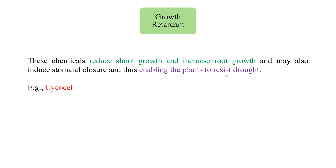Growth retardant type antitranspirants reduce shoot growth and increase root growth, and may also induce stomatal closure, thus enabling the plants to withstand drought. For example, cyclic compounds can act as growth retardant antitranspirants.